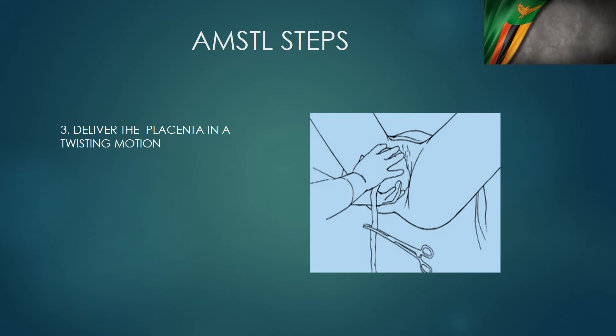At this stage, we withdraw the arm from the abdomen and from the cord where we have been doing traction. We put both arms on the placenta and deliver it out in a twisting motion. The twisting motion makes sure that the membranes are delivered and are not retained.